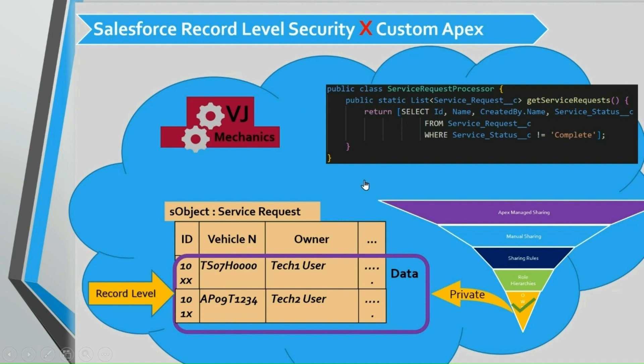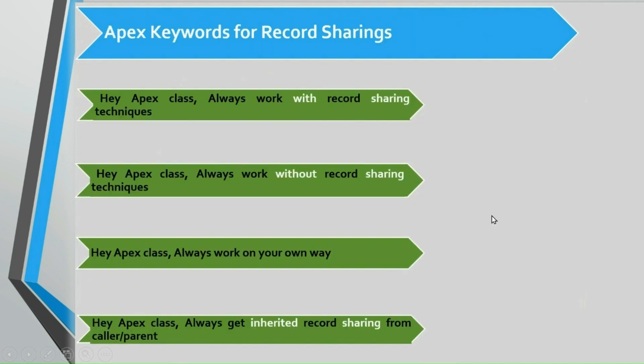Hence, omitted sharing is not secure by default. To overcome this issue, Salesforce has provided us sharing mode keywords. Let us explore the keywords that Salesforce has provided to instruct the Apex class to work as per our expectations with respect to record sharing techniques.